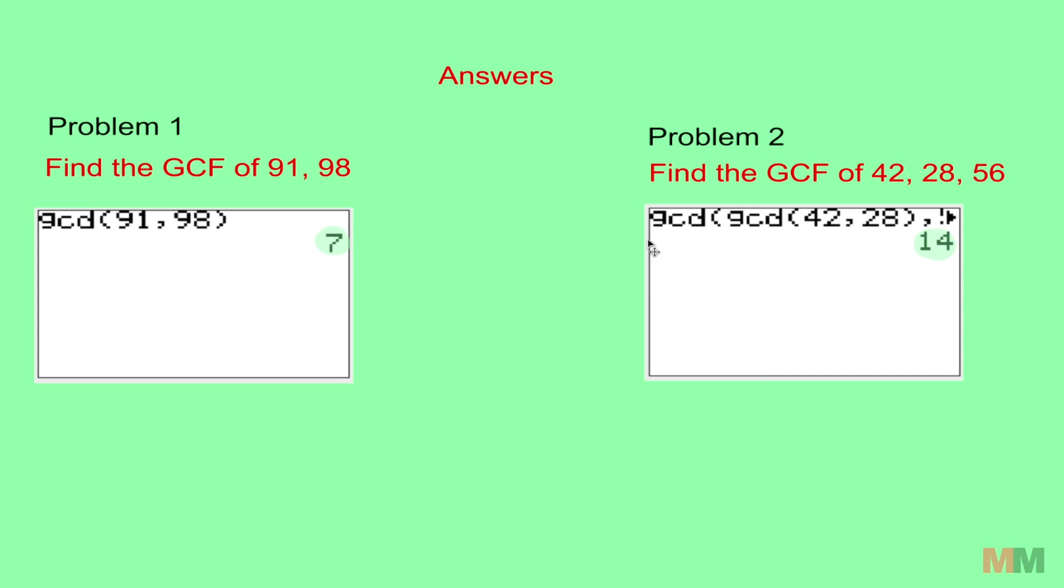Alright, here are your answers. For problem number one, the first answer is 7. You just had to do that one time and you would get a 7. Second answer, you had to put GCD twice and when you hit enter, you should have gotten 14.